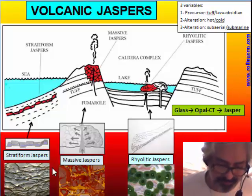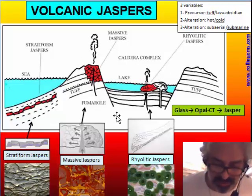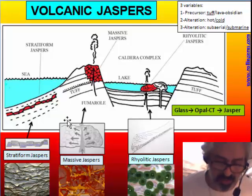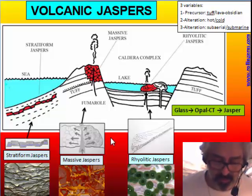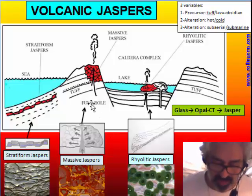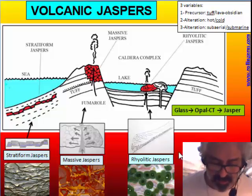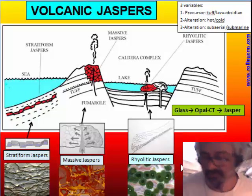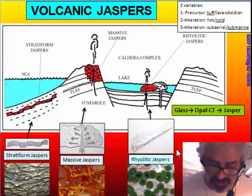The three kinds of volcanic jasper depend on distance from the vent — that is, temperature. Stratiform jaspers are an alteration of tuff in cold conditions far from the volcano. Massive jaspers are more induced by fumarolic activity and temperature, forming thicker deposits nearer to the vent. Rheolytic jaspers are the result of alteration of obsidians. Glass is very unstable and most obsidian in the geological record is altered into rheolytic jasper or other silicate materials.